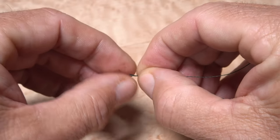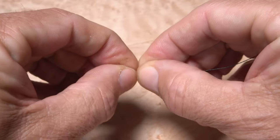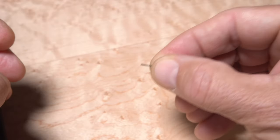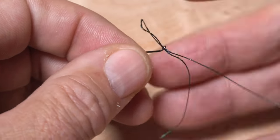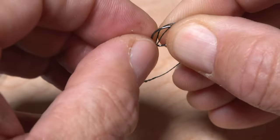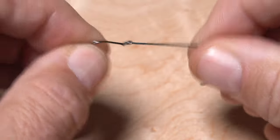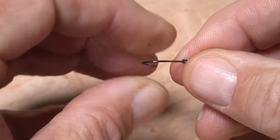Fold the braid roughly in half and give the folded over end a tight little twist. This will make it much easier to insert it from front to back through the hook eye. You can then feed the bend of the hook through the loop and pull the loop up so it seats around the shank behind the hook eye.